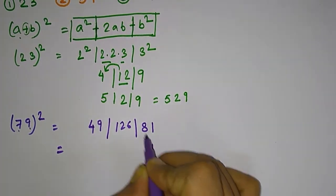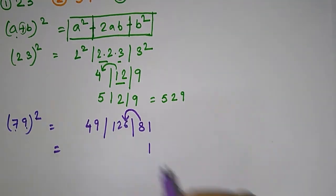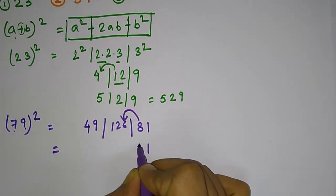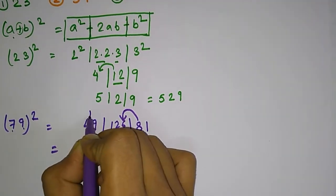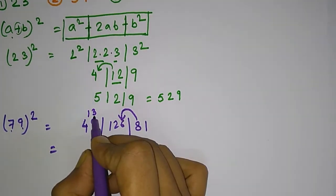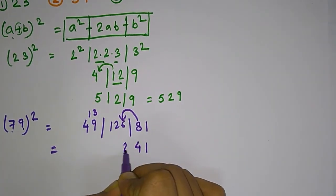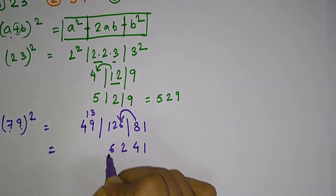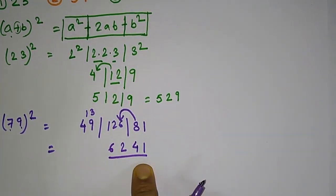Now you have to give carry overs. So this 8 will be carried over to give 134. 4 remains and 13 is carried over. Now you have 9 plus 3 is 12, 2, 4, 2, 6. That gives the answer 6241.